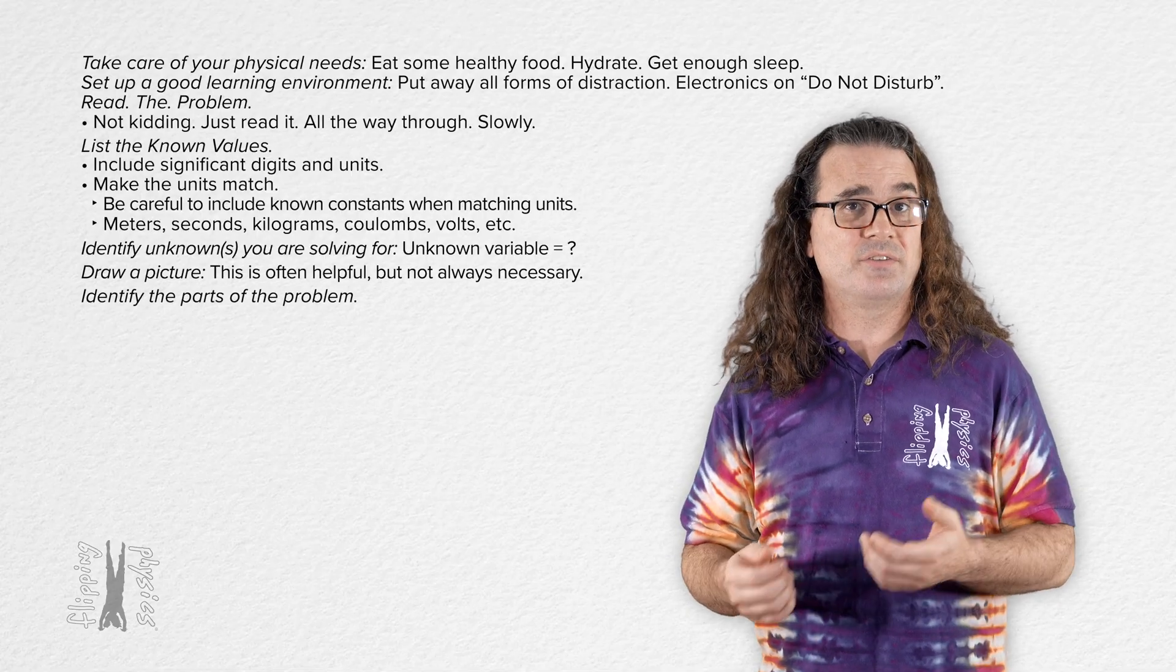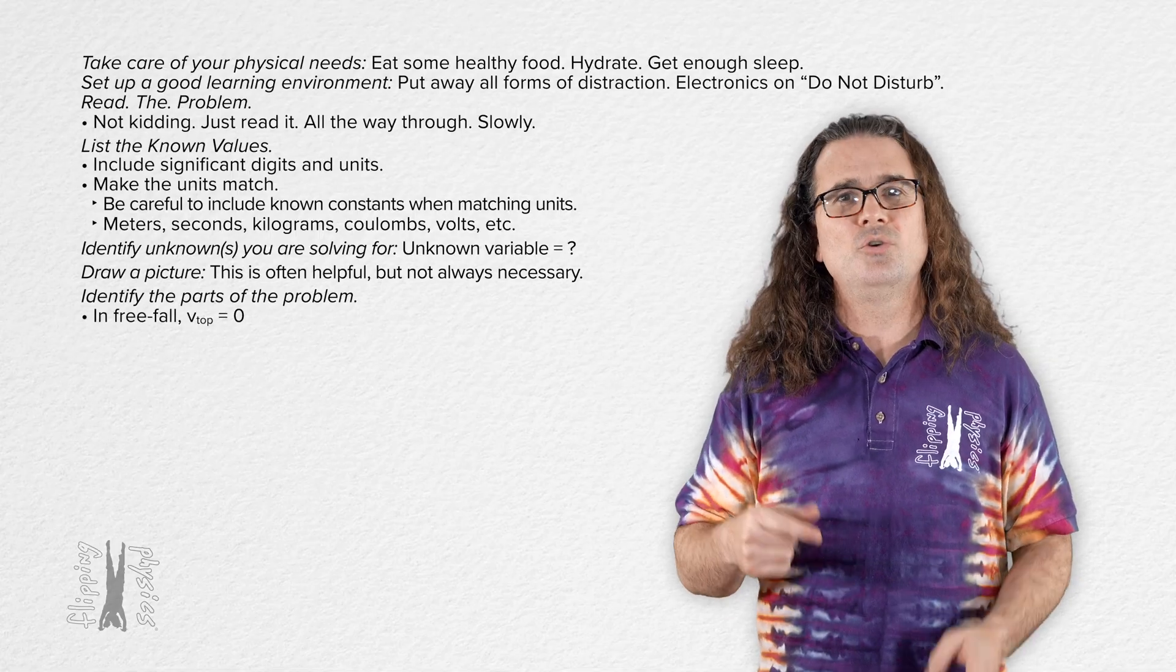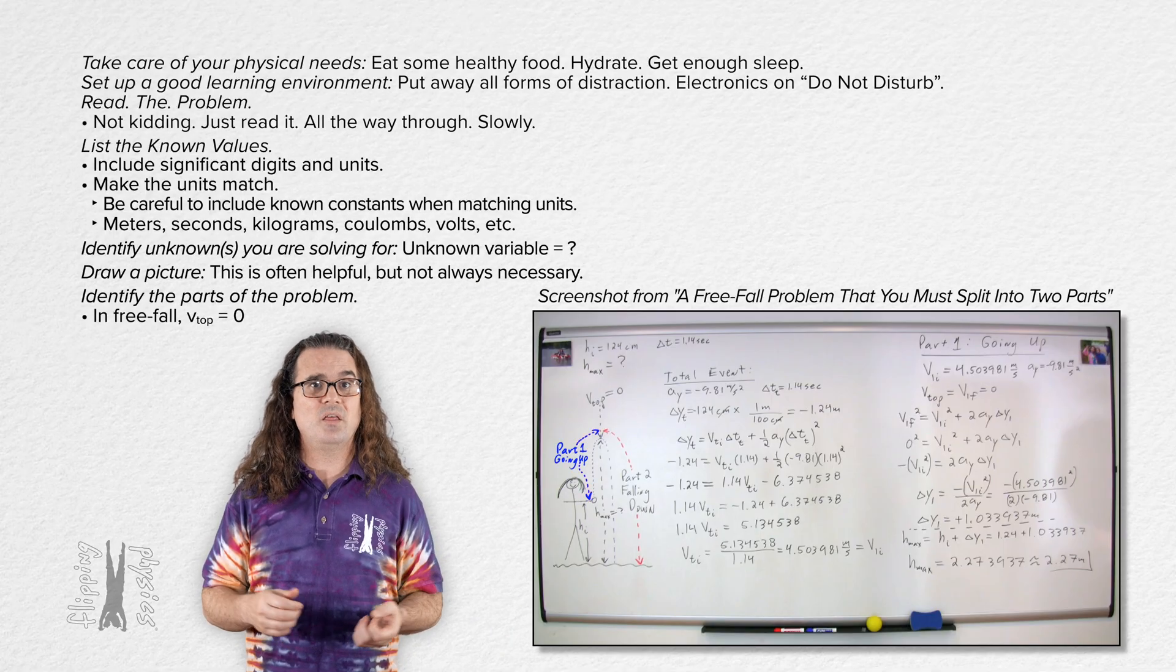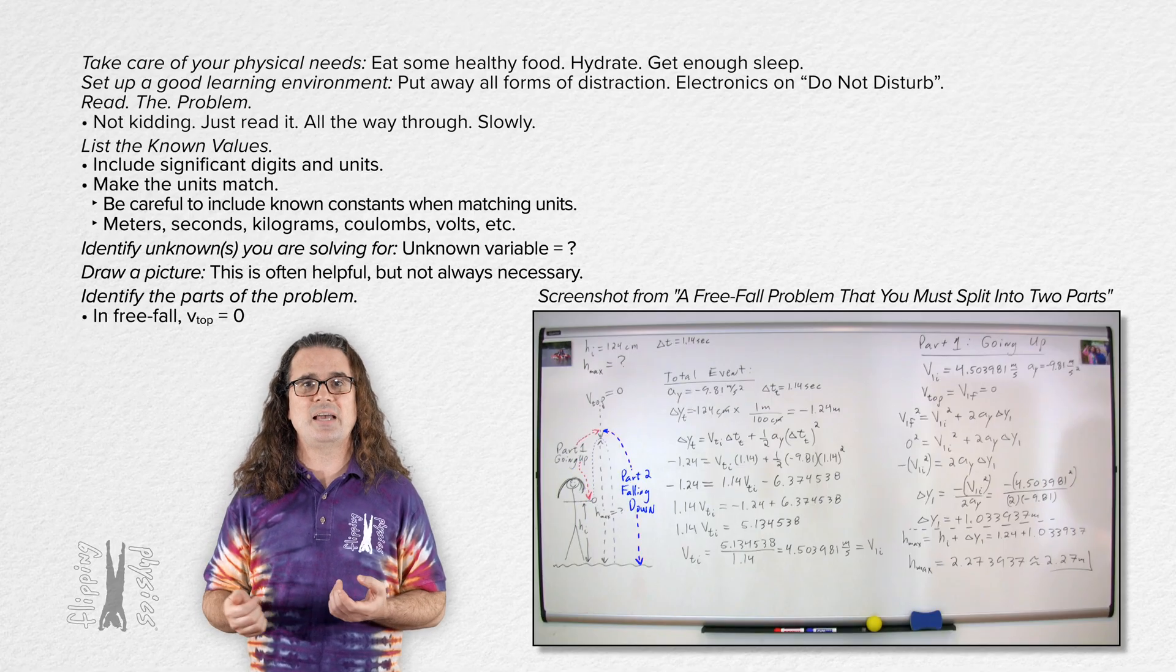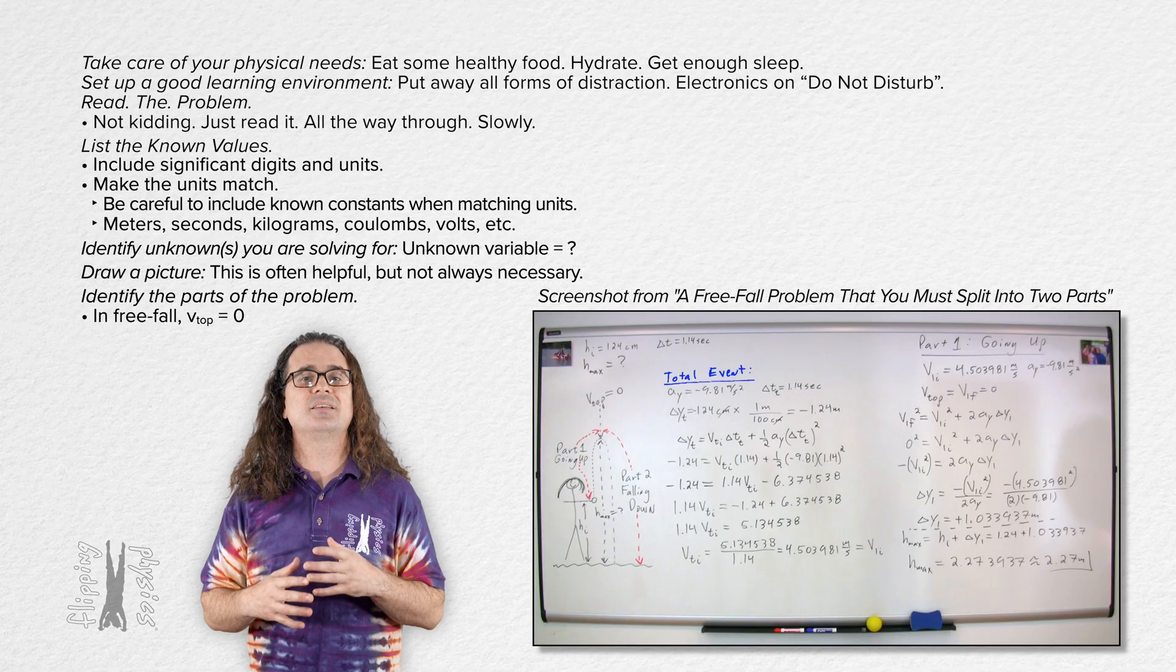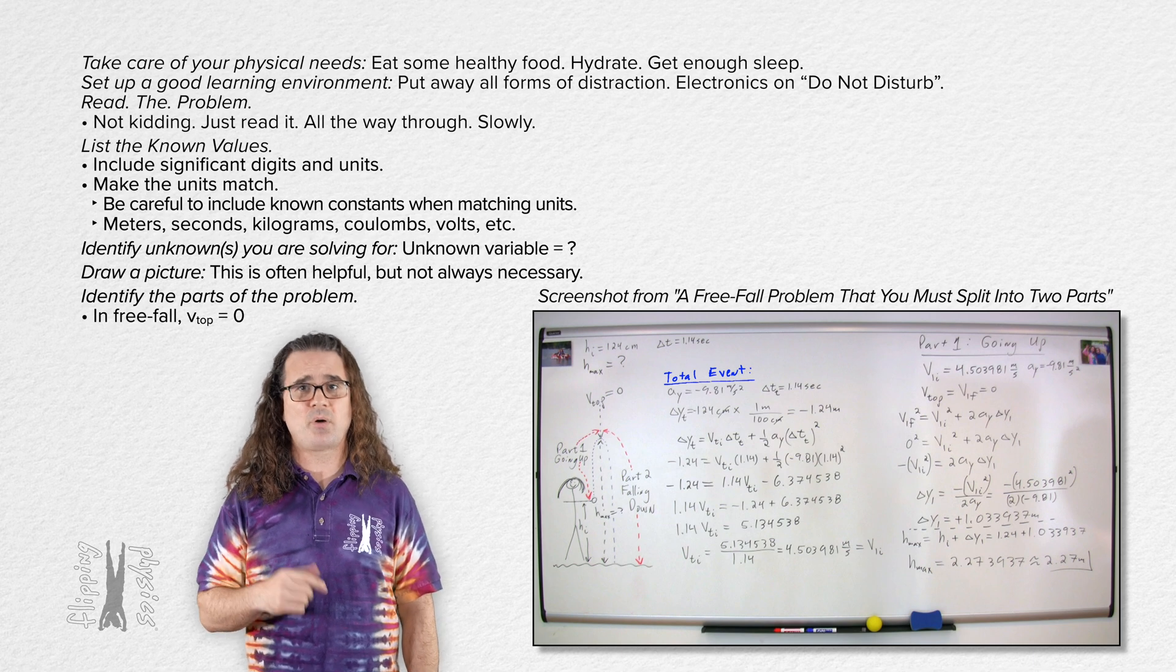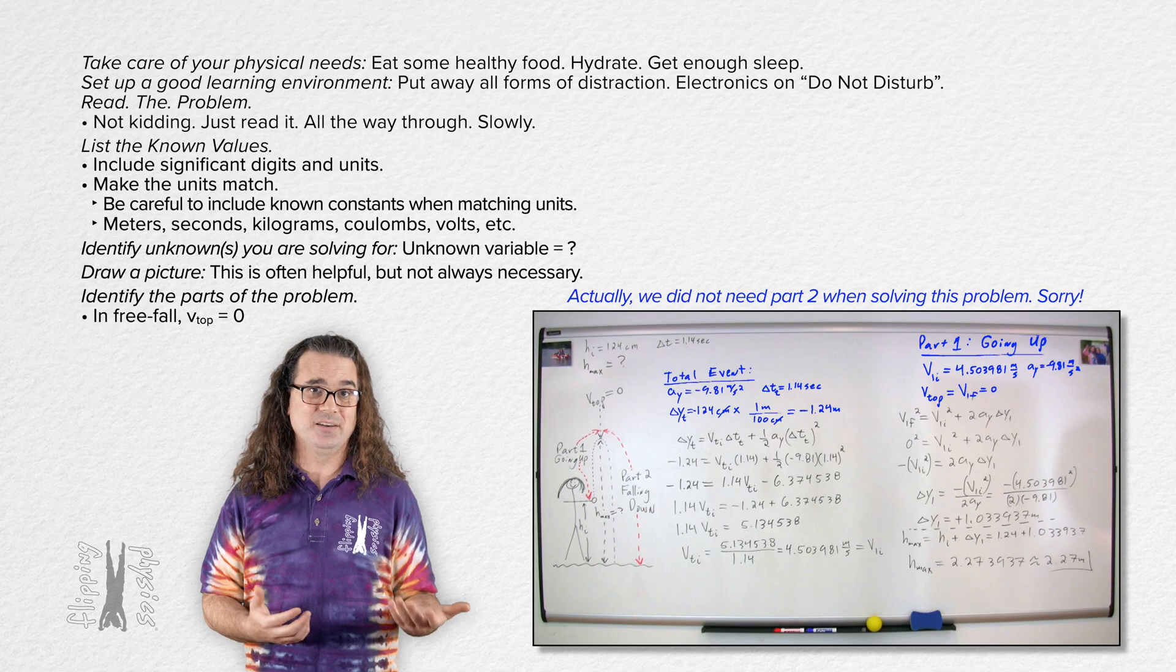And then, identify if there are different parts to the problem. For example, in free fall, you know the velocity at the top in the y direction equals zero. So, as we did in this video, we identified part one as while the ball was moving up to the top. And part two as while the ball was moving down after being at the top. And we even identified the whole event as a separate part as well. When you do that, you should list all of your known values for part one, for part two, and for the whole event, which is exactly what we did here.